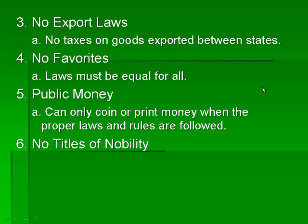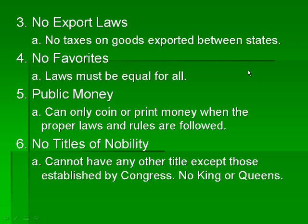They also cannot tax anything exported between the states. All laws must be equal for all people and all states. Public money can only be coined or printed when the proper laws and rules are followed. And there are no titles of nobility — you cannot be born a senator, you are not born a president, there are no earls of Washington. You cannot have any title except those established by Congress — no king or queen. That is Unit 7, Lecture 1. We will be moving on to federalism in the next lecture.